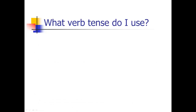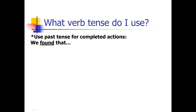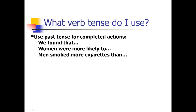Another thing that confuses students writing their first scientific manuscript is verb tense. The rule is straightforward: use past tense for completed actions. 'We found that' — you've already done the study, so that's past. 'The women in our study were more likely to' — you've already measured them, so that's past. 'Men smoked more cigarettes' — your experiment is completed. 'The average reaction time was' — again, your experiment is completed. All of those are past tense.